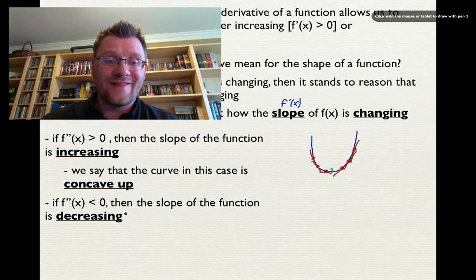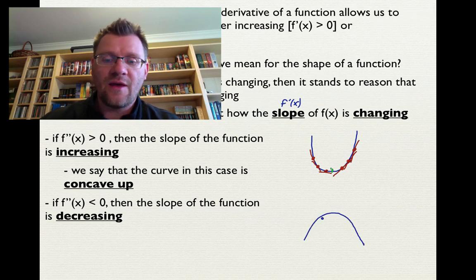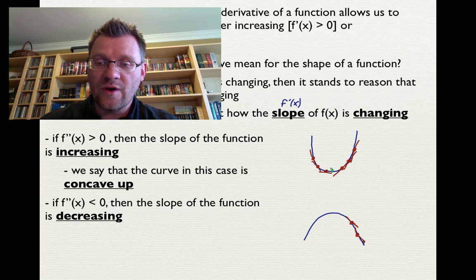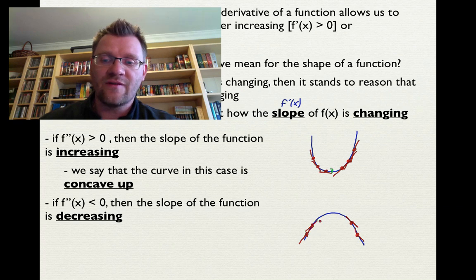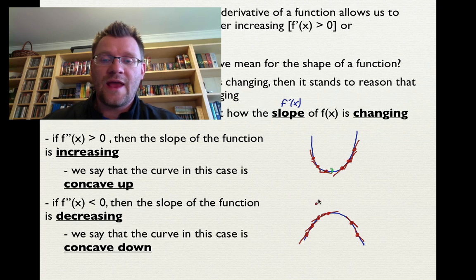When f double prime x is less than zero, the slope of the function is decreasing, and that corresponds to a shape like an upside-down parabola. On the right side, the slope is negative and becomes more steeply negative. On the left side, there is a positive slope that decreases, becoming closer and closer to horizontal. We say that this curve is concave down. Again, a concave down shape can have both increasing and decreasing parts.